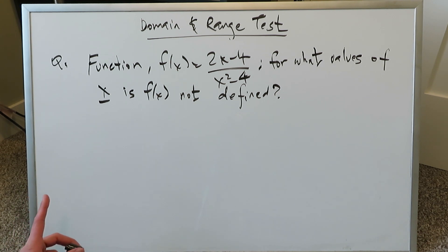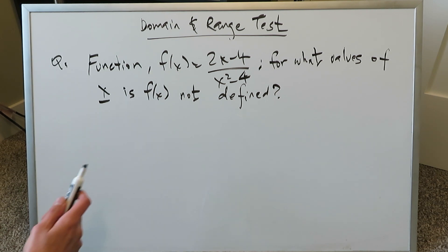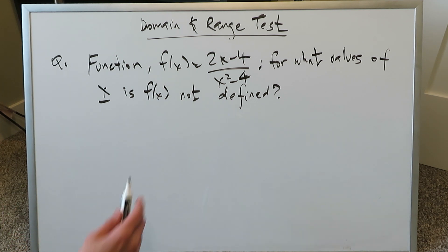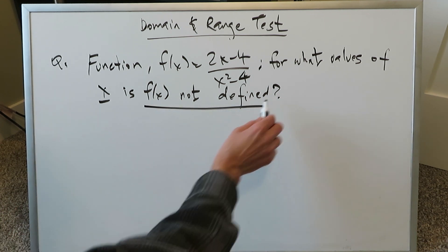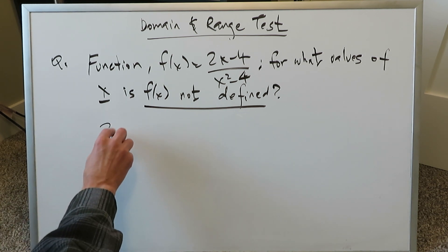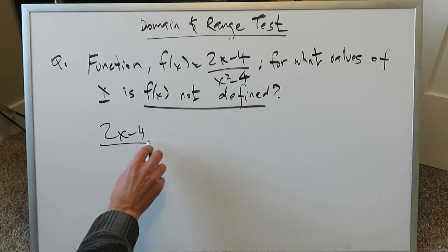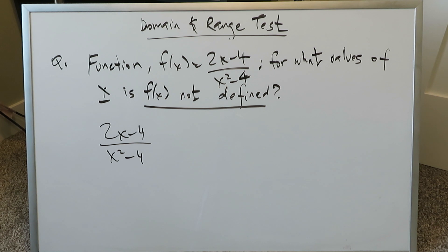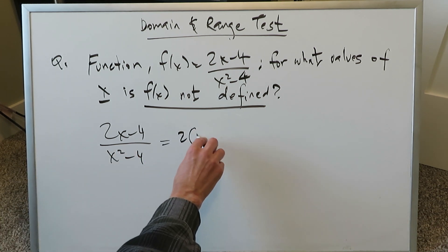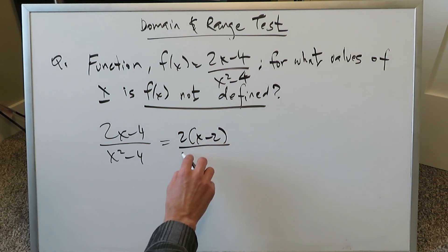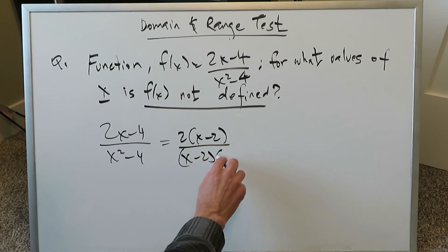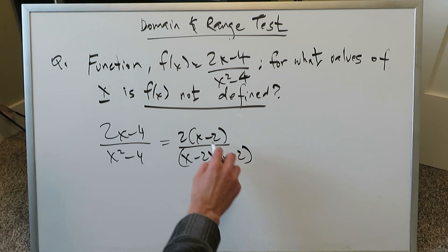Our first question of 5: function f of x is equal to 2x minus 4 divided by x squared minus 4. We have a rational function, and we have to determine for what values of x this function is not defined — which basically means what values of x are not within the domain. This question tests whether students will take the time to simplify this rational function before doing domain determination, because if they do not, you might end up overestimating or underestimating your domain. You've got to simplify this first.